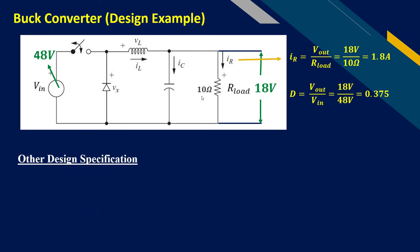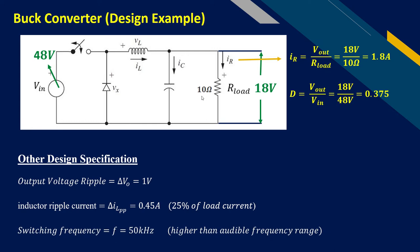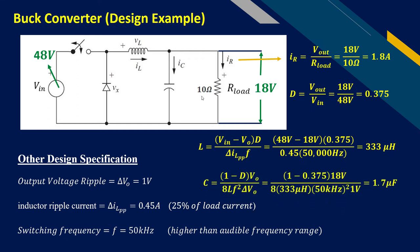Consider the other design consideration. For example, we want that the output voltage ripple is about 1 volt. If we want to further reduce this ripple then we have to use a higher value of the capacitor. Second, we consider that the inductor ripple current is 25% of load current which comes out to be 0.45 amperes. And switching frequency is kept at 50 kHz which is higher than the audible frequency range. Next, find the inductor's design value which comes out 333 microhenry. Lastly, find the capacitor design value which is 1.7 microfarad.